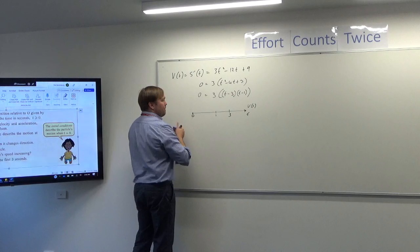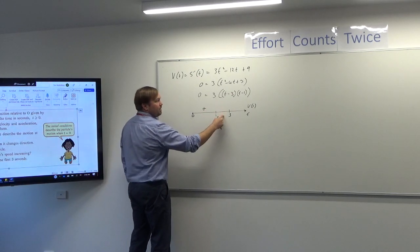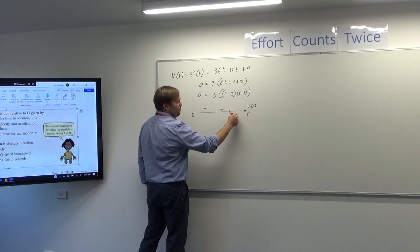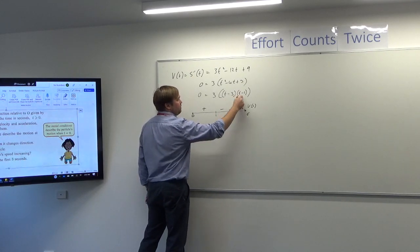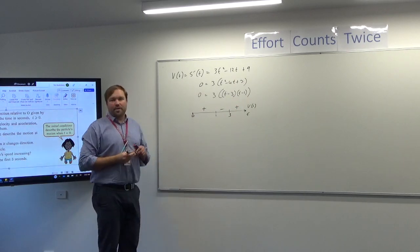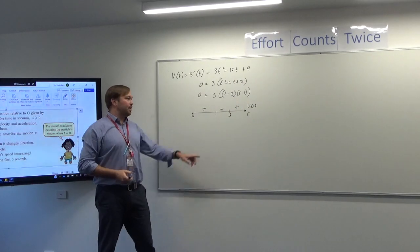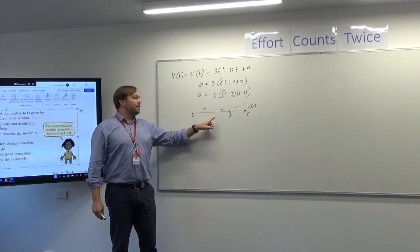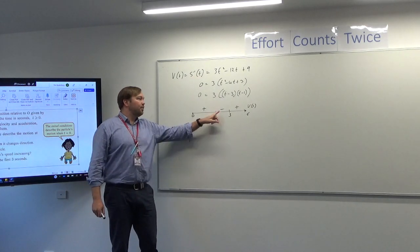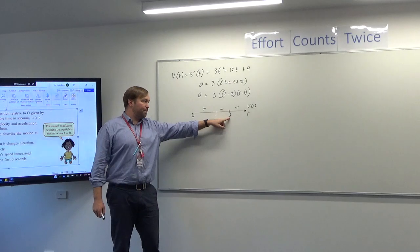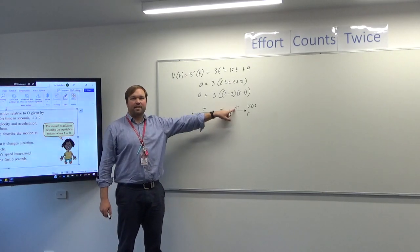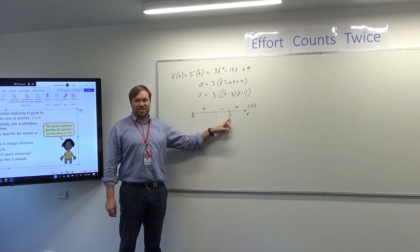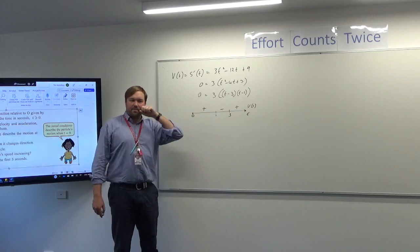If we put t = 0.5 in, two negatives make a positive. If we put t = 2 in, a negative and positive make a negative. If we put t = 4 in, positive and positive make a positive. What this is saying is the particle moves to the right, stops, moves left, stops, then moves right. Each of these zeros is a point where the particle is stationary for an instant.